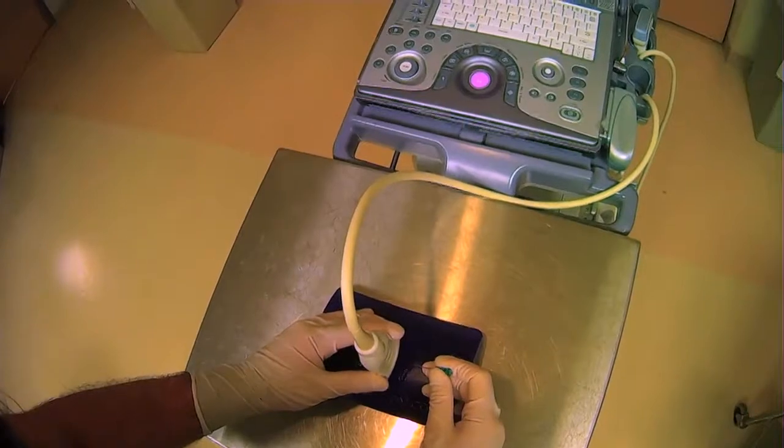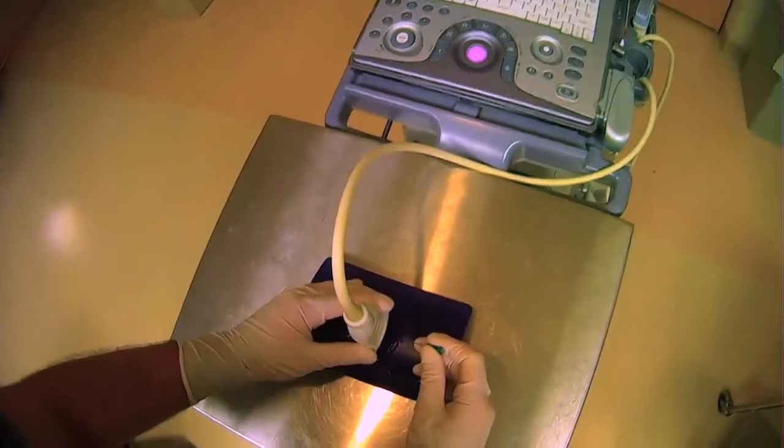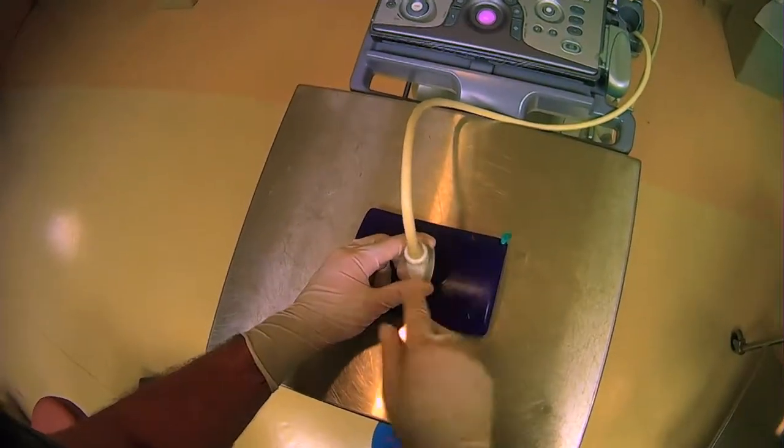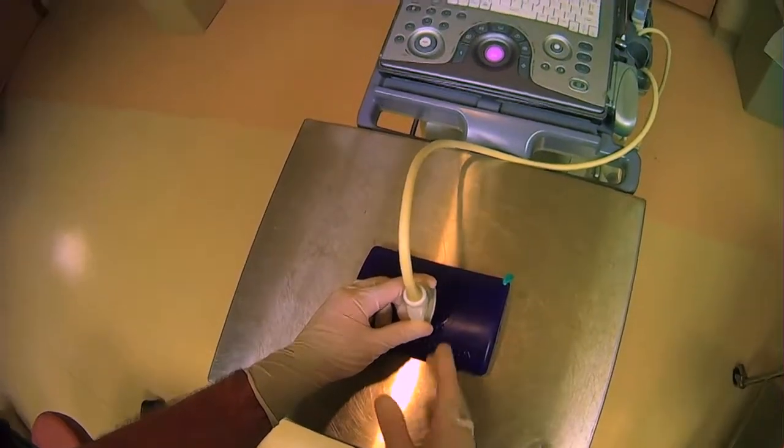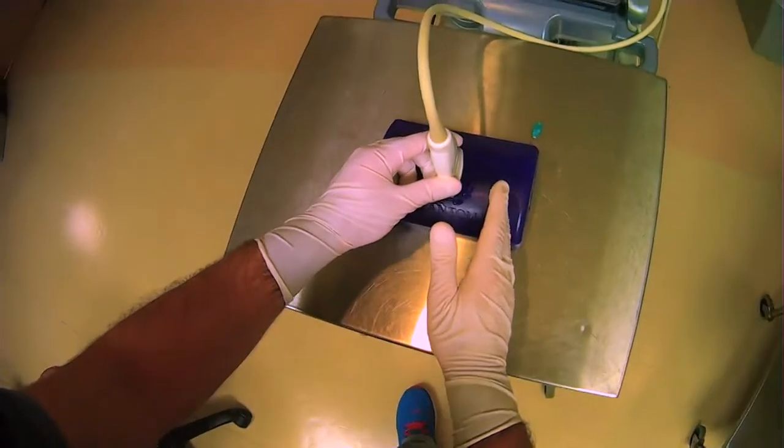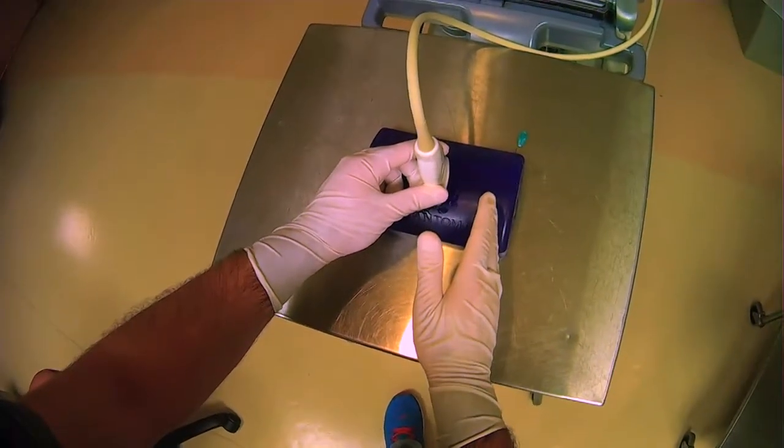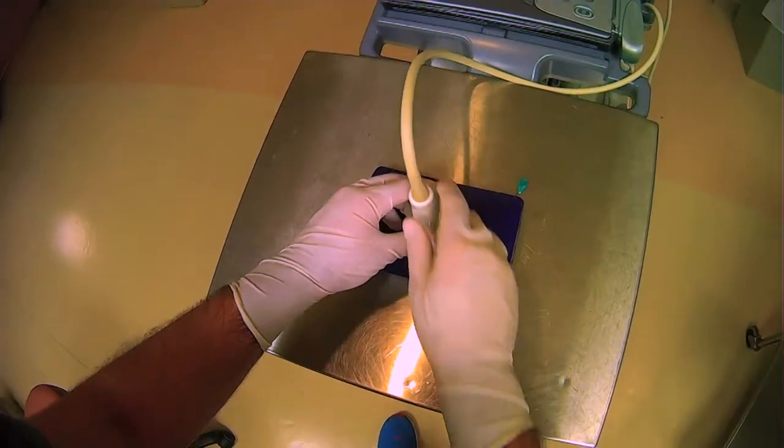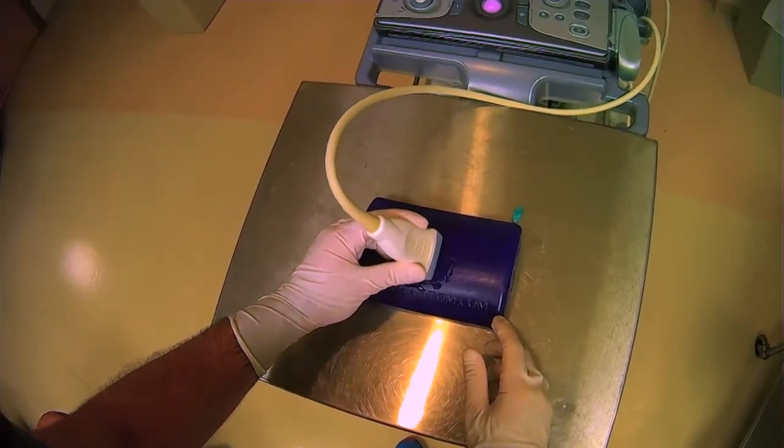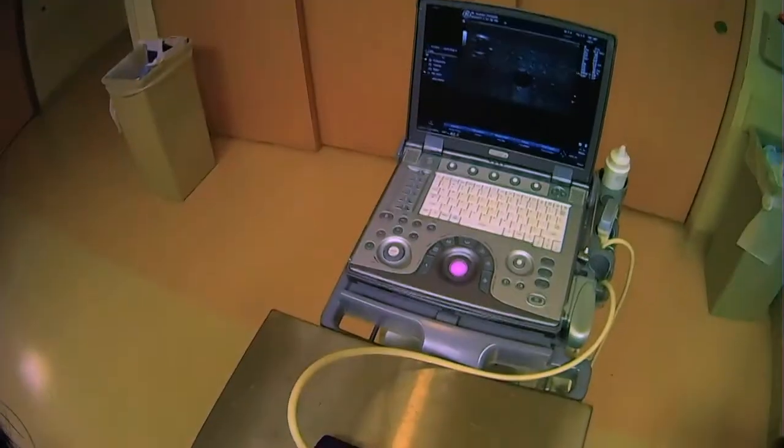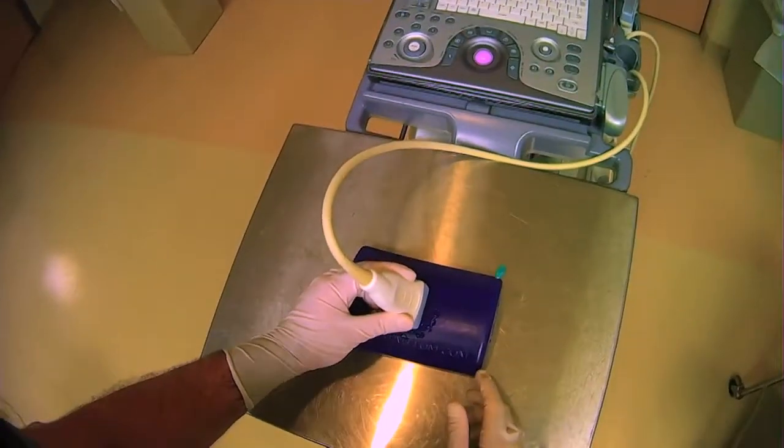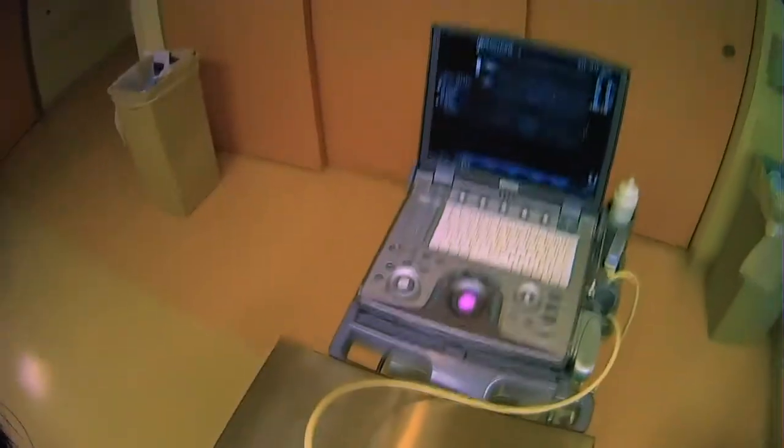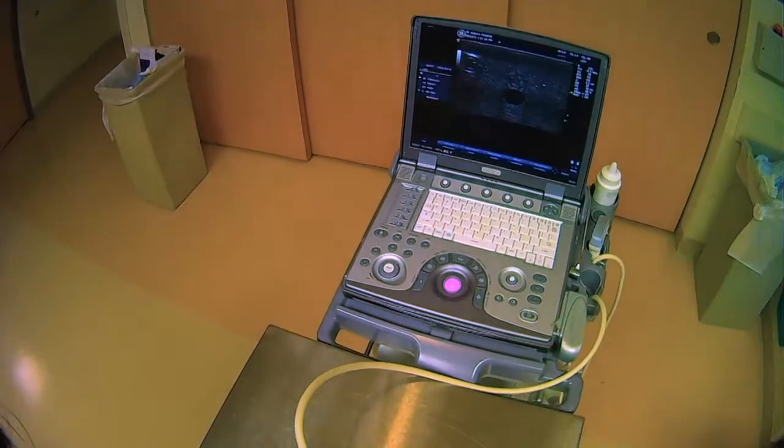So one thing you can do to account for this is that you can actually alter the way that you hold your probe here. Because we're entering on the right side of the probe here we can actually oblique our probe like this so it will take less time for us to see that needle tip once we begin inserting it.